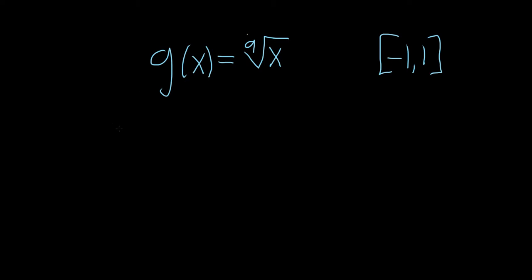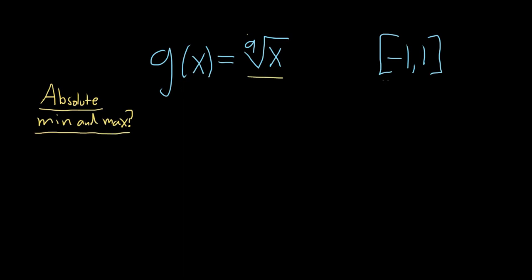In this problem, we have to find the absolute extrema of this function on this interval. So we're looking for the absolute minimum and max — we want both. There's something called the extreme value theorem that says whenever you have a continuous function like this one on a closed interval — so we have brackets — you're always going to have an answer. You're always going to have an absolute max and absolute min.